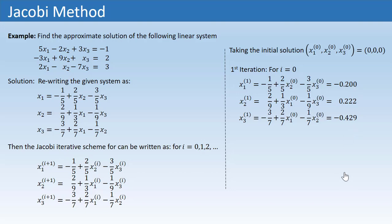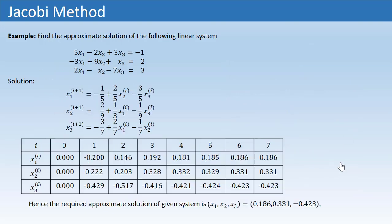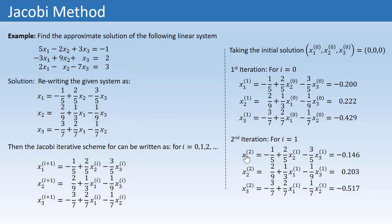For I=1, we get the solution expression for the second approximate solution. On the right-hand side we require X1¹, X2¹, and X3¹ — the first approximate solution just found. Substituting those three values gives the second approximate solution: −0.146, 0.203, −0.517.